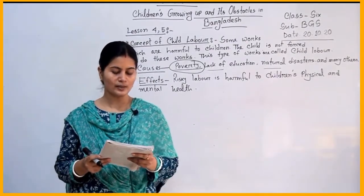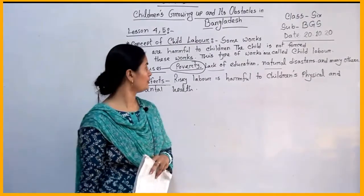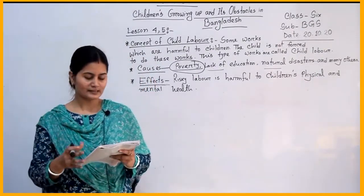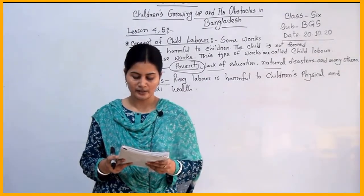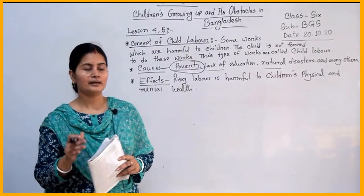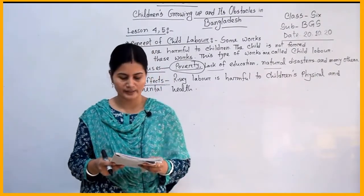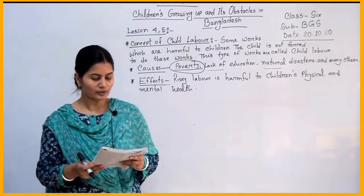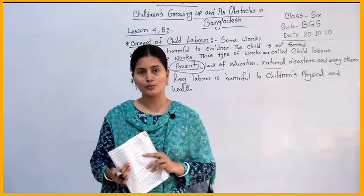Now, the effects of child labor on social life. Risky labor is harmful to children's physical and mental health. Because of excessive labor, they are attacked with infectious diseases. A kind of mental reaction is created among child laborers when they see other children of the same age going to school while they cannot, because of poverty. This creates an inferiority complex in them, and children cannot demonstrate normal behavior. Child labor is also another cause of juvenile delinquency.